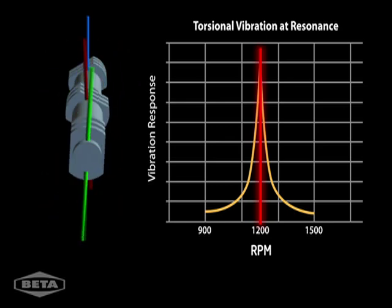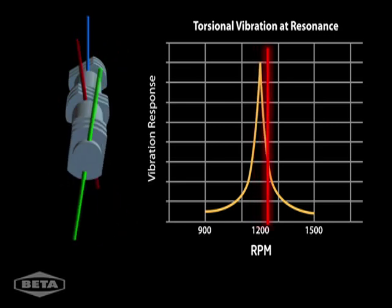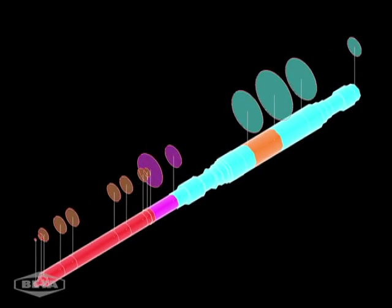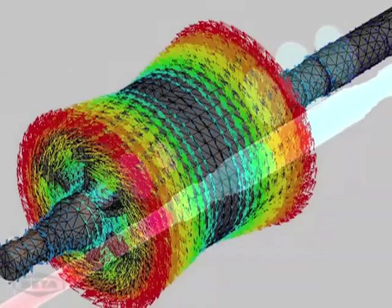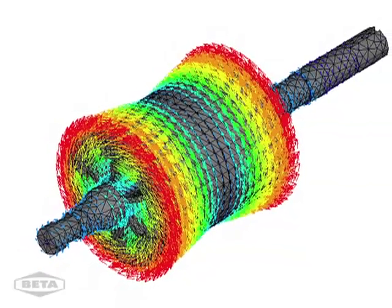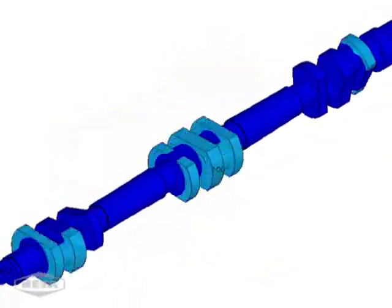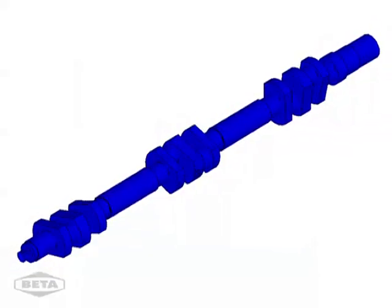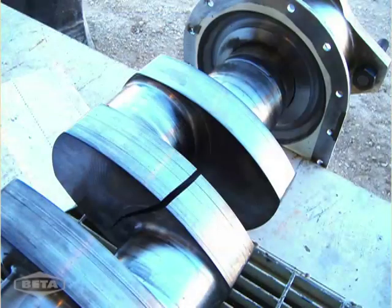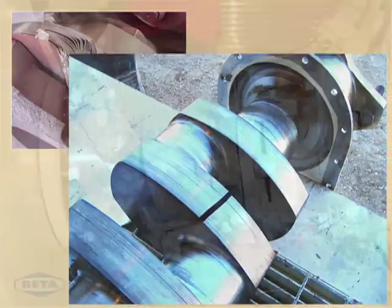At resonance, the vibration response is greatly amplified. Above the resonant frequency, vibration response is significantly reduced. The torsional analysis must accurately predict resonant conditions and vibration problems; if not, the results can be catastrophic — destroyed couplings, broken compressor shafts, and broken motor shafts.